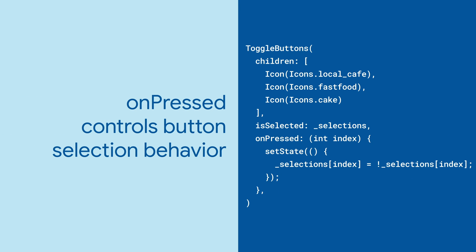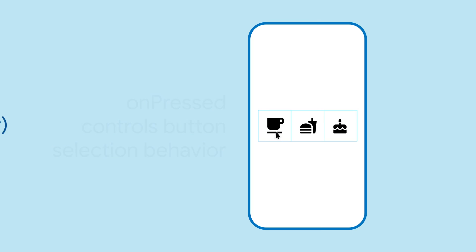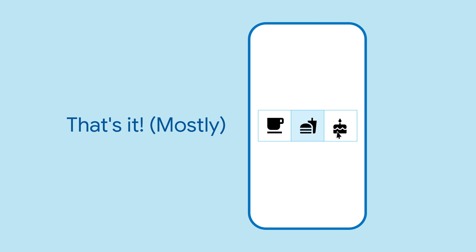Lastly, pass a function to onPress to respond when the user presses a button. You can control selection behavior, such as how many buttons are allowed to be selected, with this function. And now you've got a nice row of toggle buttons.